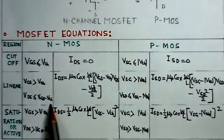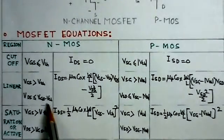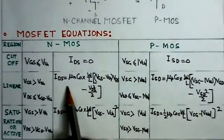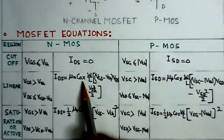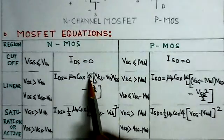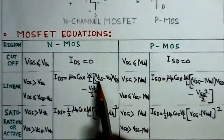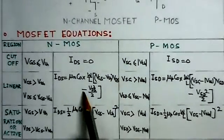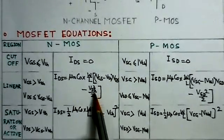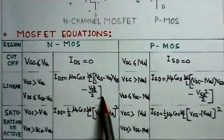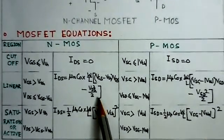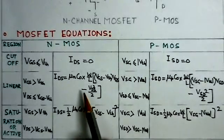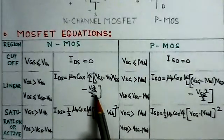Linear region is VGS greater than V-threshold and VDS is less than VGS minus V-threshold. This is the condition for the linear region and the corresponding equation for the drain current is mu-N-COX W by L, VGS minus V-threshold into VDS minus VDS squared over 2. This is the equation for the drain current for the linear region.